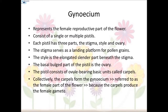The gynoecium may consist of a single or multiple pistils. Each pistil has three parts: the stigma, style, and ovary. The stigma serves as a landing platform for pollen grains. The style is the elongated slender part beneath the stigma. The basal bulged part of the pistil is the ovary.